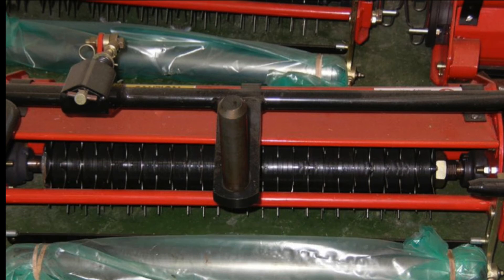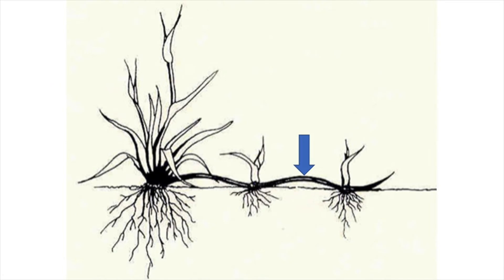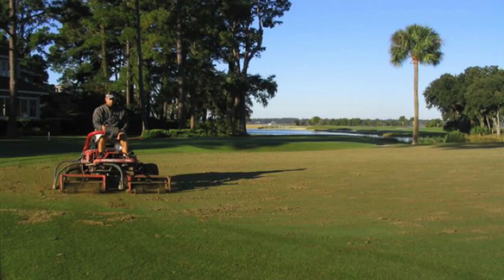The blades are set in contact with or slightly below the soil surface to cut stolons. The cutting of stolons helps remove some of the lateral growth and also stimulates new leaf appearance on the buds adjacent to the cut stolon. The blade cutting the stolon stimulates new shoots at the buds, resulting in increased turf density. Vertical cutting can also be done to help remove organic matter from the green.